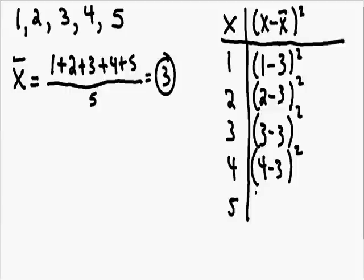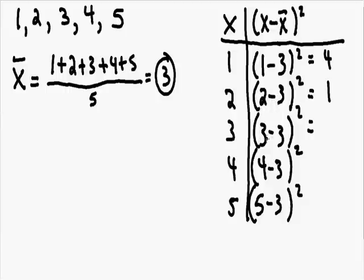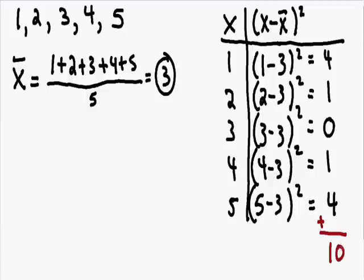In the fifth row we have (5 minus x̄), which is (5 minus 3) squared. Simplifying each row: (1 minus 3) is negative 2, and negative 2 squared is positive 4. (2 minus 3) is negative 1, and negative 1 squared is positive 1. (3 minus 3) squared is 0. (4 minus 3) is positive 1, and 1 squared is positive 1. (5 minus 3) is positive 2, and 2 squared is 4. Adding all the right-hand values: 4 plus 1 plus 0 plus 1 plus 4 equals 10.